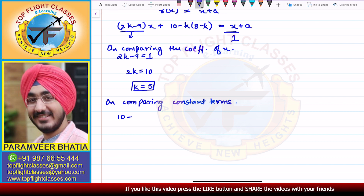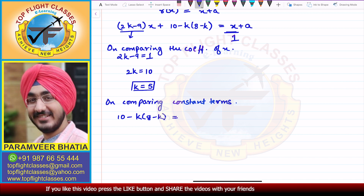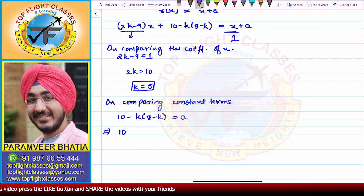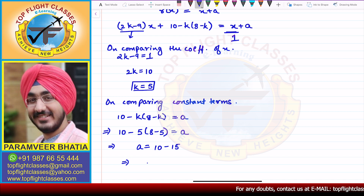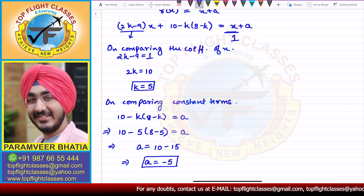Now comparing the constant terms: 10 minus k(8 minus k) = a. Substituting k = 5: 10 minus 5 × (8 minus 5) = a, which gives 10 minus 5 × 3 = a, so 10 minus 15 = a. Therefore a = minus 5.